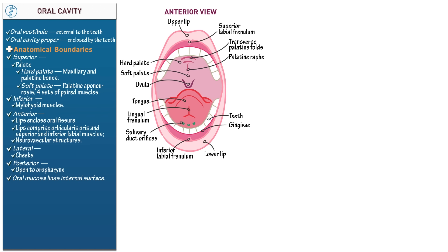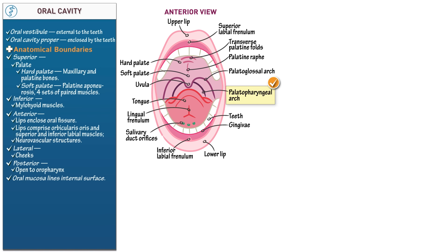The uvula comprises the musculus uvulae and connective tissues. Indicate the two posterior arches: the palatoglossal arch, which extends from the soft palate to the tongue, and posterior to it, the palatopharyngeal arch, which attaches to the pharynx. These arches are formed by the bilateral palatopharyngeus muscles, which elevate the pharynx during swallowing. Between the arches, show the palatine tonsils, which are collections of lymphoid tissue housed within the tonsillar sinuses or fossae.